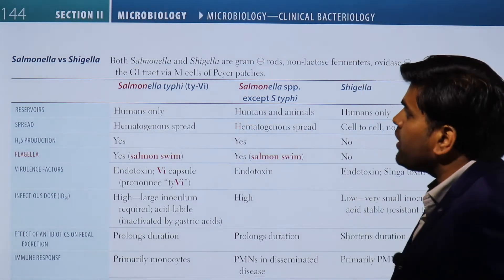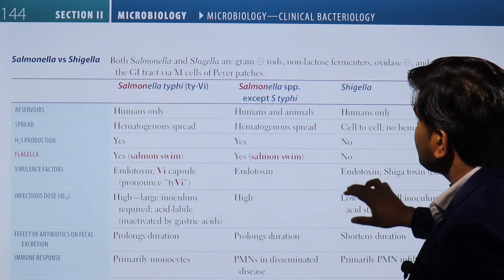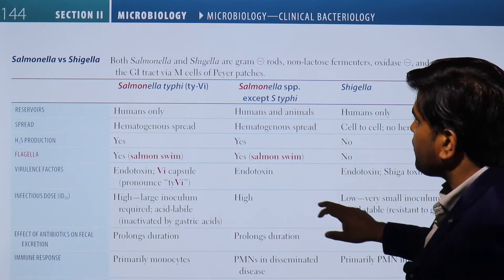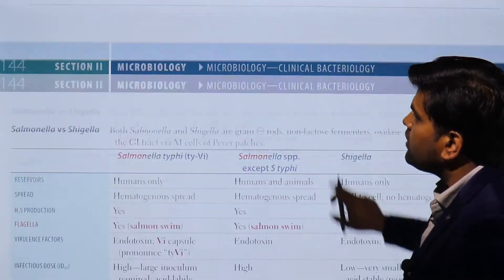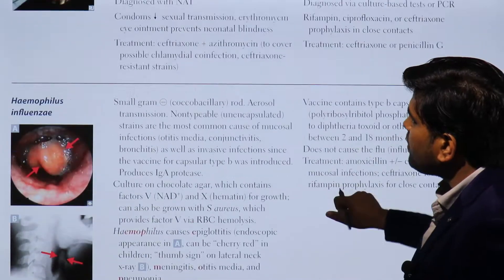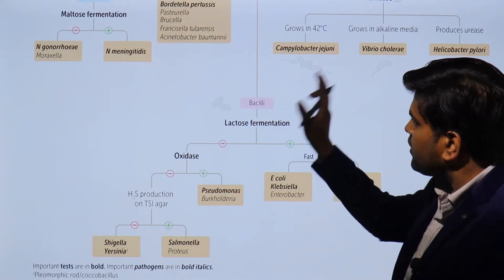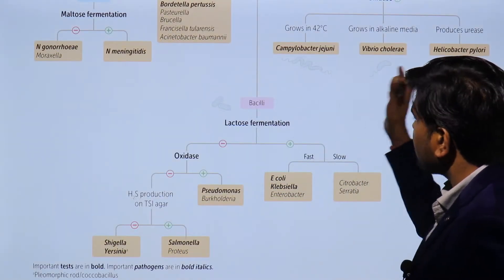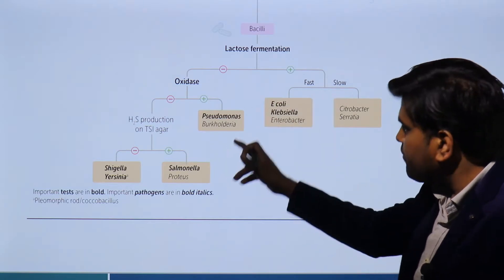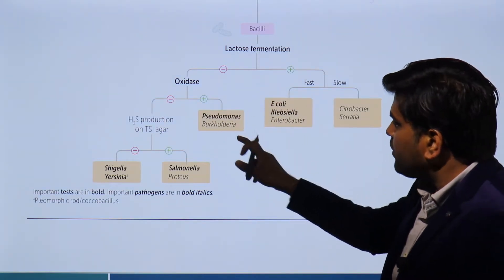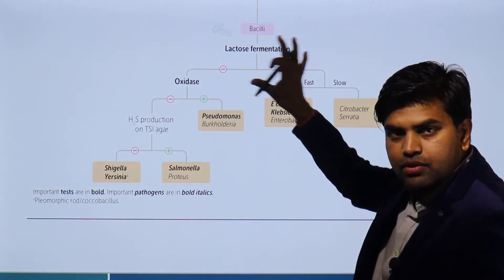Hello and welcome. We are on page 144 of the USMLE Step 1 2021 microbiological section. Previously we discussed Pseudomonas aeruginosa. Now moving forward, if you remember the diagram where we talked about gram-negative bacilli divided into true bacilli, coccobacilli, and curved rods — among the bacilli we divided into lactose-fermenting and non-fermenting organisms. Now let's discuss the Salmonella and Shigella groups.